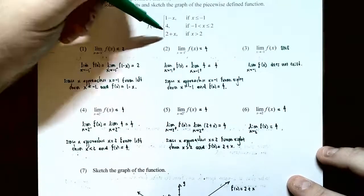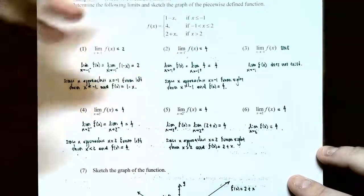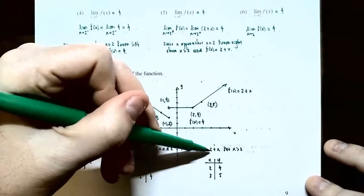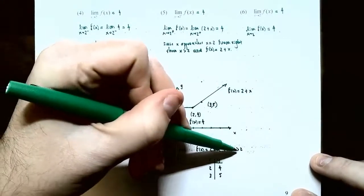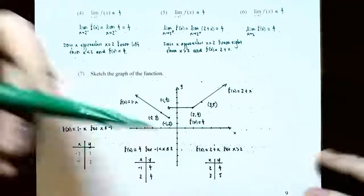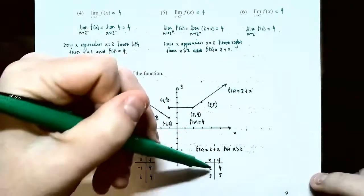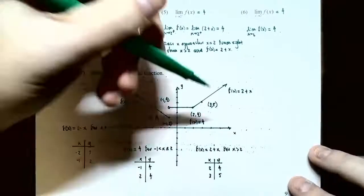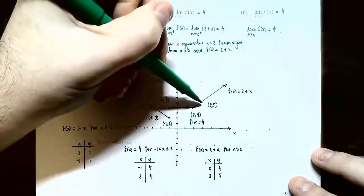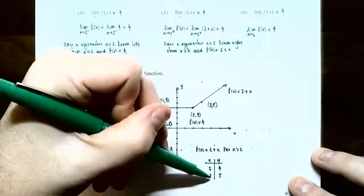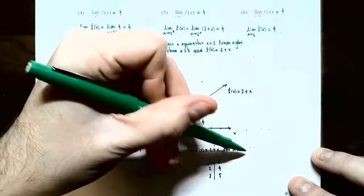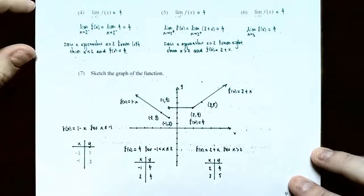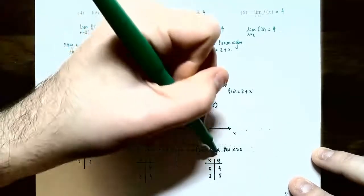For the last piece, f(x) equals 2 plus x when x is greater than two. This is a linear function with slope one and y-intercept two. Plugging in two gives four and plugging in three gives five. The graph goes up to the right forever from just past x equals two, with an open circle at (2, 4) — since x must be strictly greater than two — and a filled-in point at (3, 5).